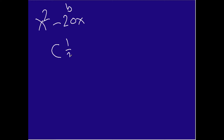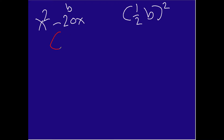You take the coefficient, multiply it by one half, and then you square that. This is what we do with our coefficient here. So in other words, we're going to take one half, multiply it by negative 20, and then square that. If we do that, we can take the first step towards completing the square.